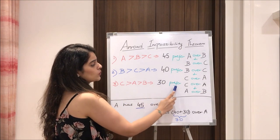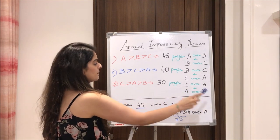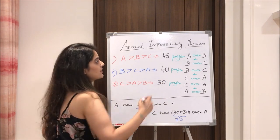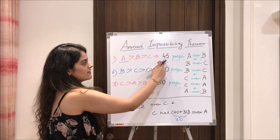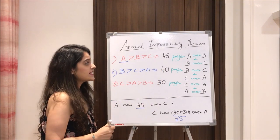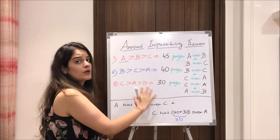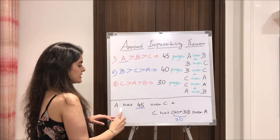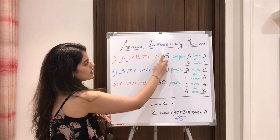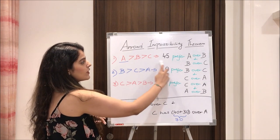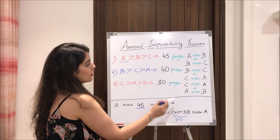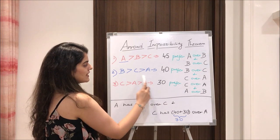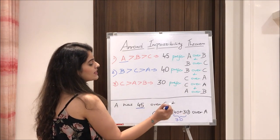Lastly, 30 people prefer C over A and A over B, so C has the most votes in that group. By these numbers, the overall winner is A with 45 votes. But if B were removed and we only had A and C, A still has 45 votes while C gets 40 plus 30 votes over A — meaning C would win with 70 votes.